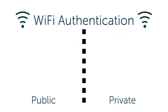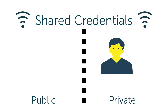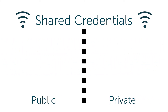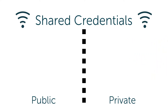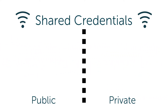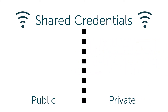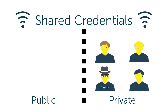Historically, there have been a few approaches to Wi-Fi authentication. One of the most common in use today is leveraging a shared SSID and passphrase. In this model, any user with the passphrase can gain access to the private network. While effective at keeping the majority of unauthorized users out, it is far from a perfect system as it does not restrict access on an individual basis.